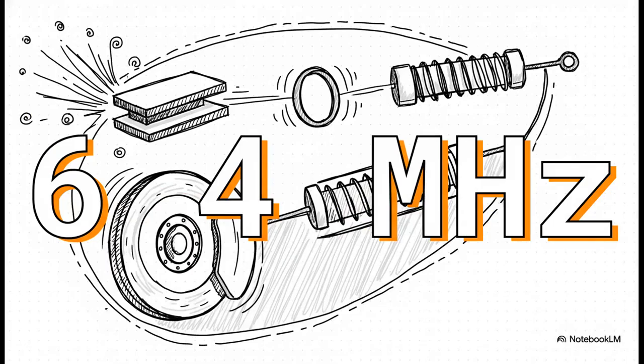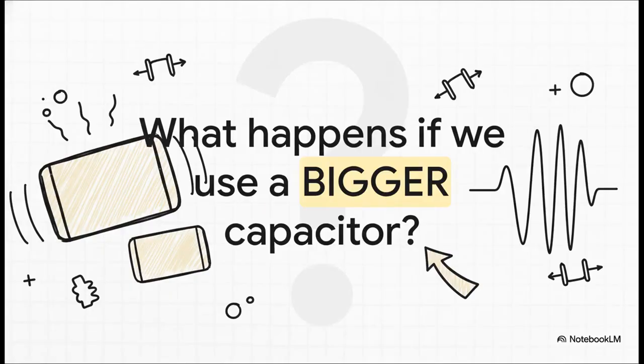Whoa! Look at that! The frequency more than doubled. It skyrocketed all the way up to 6.4 megahertz. So clearly, that capacitor was having a huge effect. It was really holding that frequency down. It was acting like a brake. Or you could say, a damper.